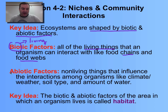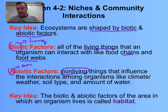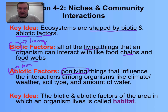The abiotic — remember you put the 'a' in front — this means 'non.' So together these are the non-living things you're going to find in an ecosystem. This would include the climate, the weather, the soil type, the water available, etc. These are all the non-living things that an organism is going to have to deal with within its environment.